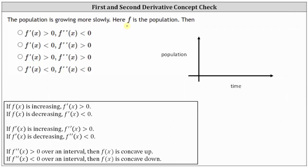However, because it's growing more slowly over time, the rate of increase is decreasing, indicating the second derivative is less than zero or negative. And therefore, the correct selection is the first choice.